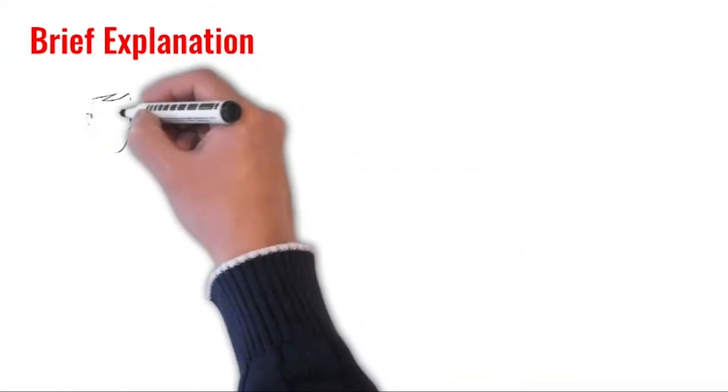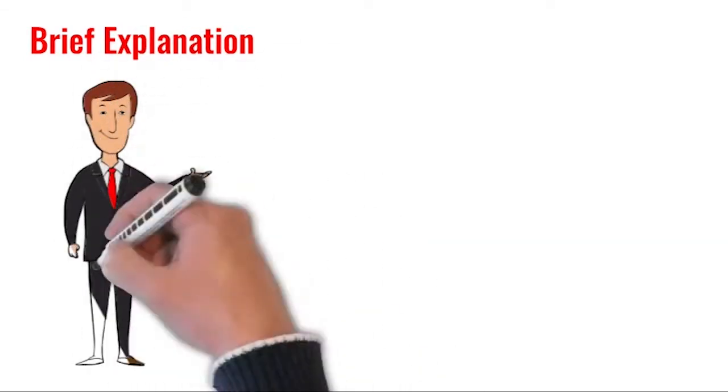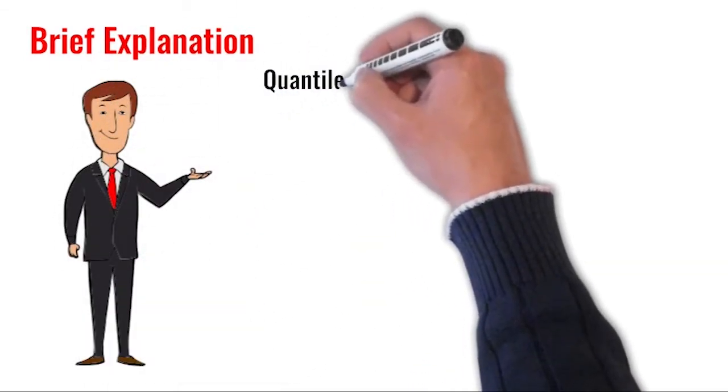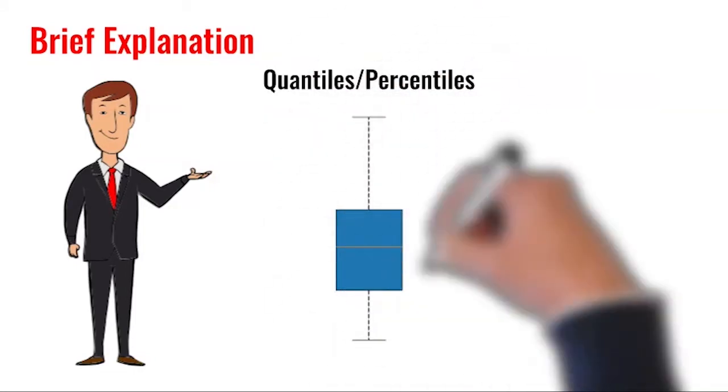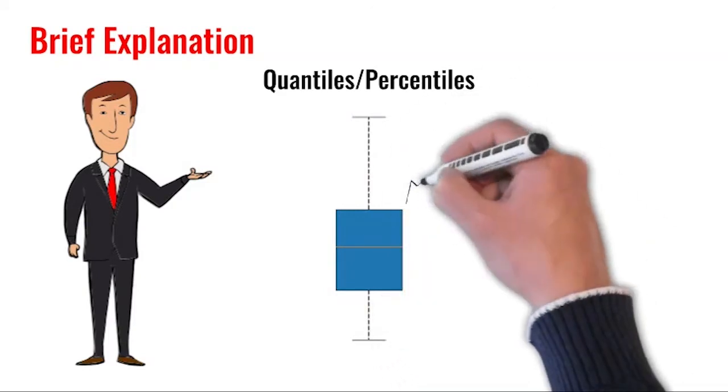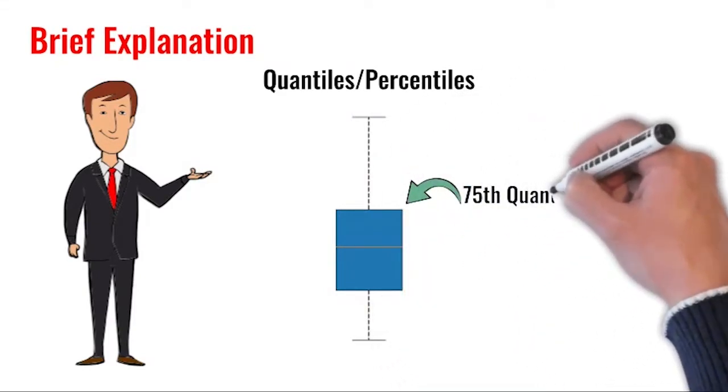We now know QQ plot is quantile-quantile plot, but what is quantile in the first place? When the whole data is sorted, 50th quantile means 50% of the data falls below that point and 50% of the data falls above that point. That is the median point. This is evident from the box plot.